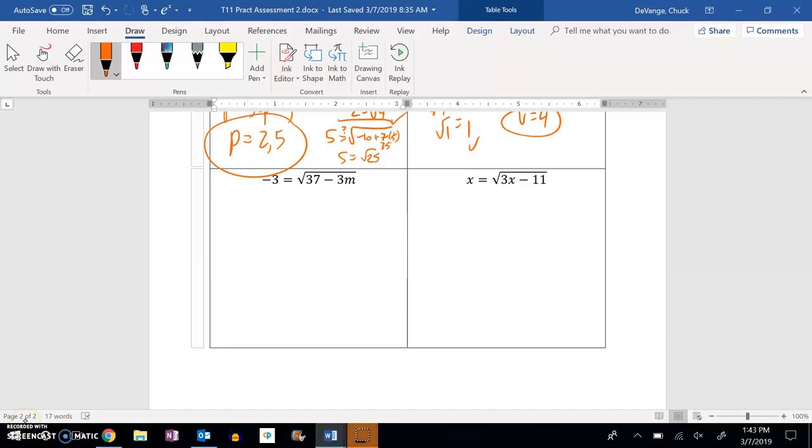This is number 11 on that practice exam. I have square root of something equals a negative number. I might see it right away: no solution. Because I'm not going to take the square root of a real number and get a negative.